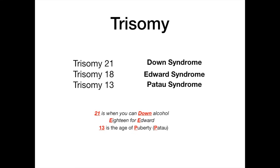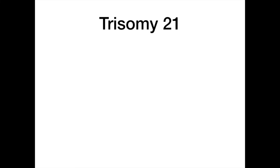Trisomy 21 is the highest yield trisomy, and most of your attention should go here. It has many associated symptoms, buzzwords, and images that can appear on your exam. We need a complex but effective mnemonic: 21 is when you can down alcohol and beer. We use the letters in ALK and beer to remind us of all the high yield symptoms. So the four A's, L, C, H, and then the word BEER.